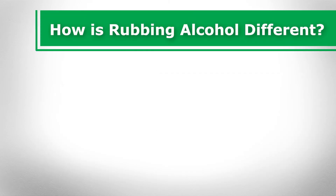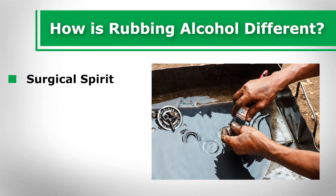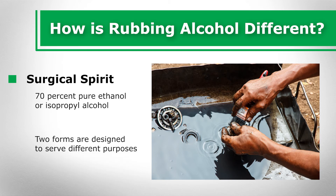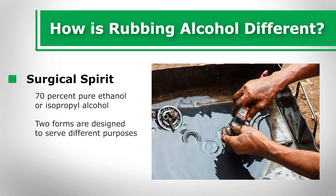How is rubbing alcohol different? Rubbing alcohol is considered to be a surgical spirit rather than a methylated spirit since it is used in medical environments as a topical application. It is a type of denatured alcohol prepared from a special solution consisting of roughly 70 percent pure ethanol or isopropyl alcohol in its concentrated form. The generic term rubbing alcohol is used to describe either isopropyl or ethyl-based products with similar qualities and is essentially a unique type of denatured solution. The two forms are designed to serve different purposes, and antiseptic versions can be used as a gentle solvent substitute for home and business applications.